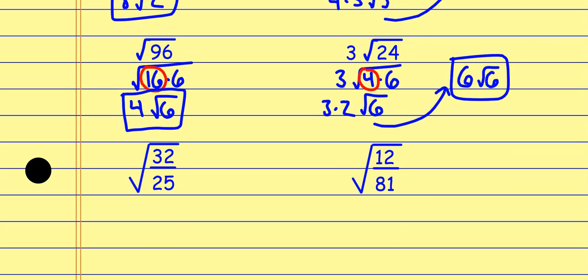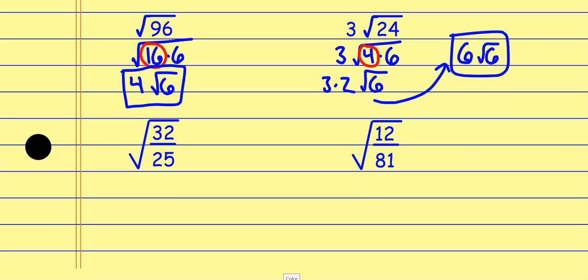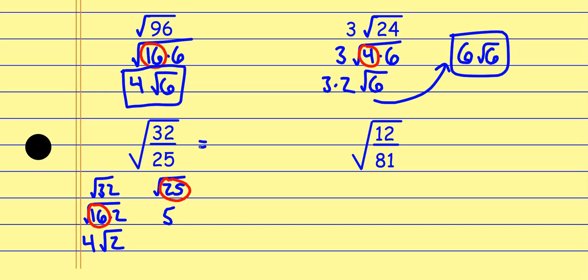For a fraction example, I'll take the square root of 32 and the square root of 25 separately. For 32, the biggest perfect square that divides in is 16 — so the square root of 16 is 4, but the square root of 2 is just √2. And 25 is already a perfect square — the square root of 25 is 5. So the fraction becomes 4√2 over 5. I'm just taking the square root of each number individually.